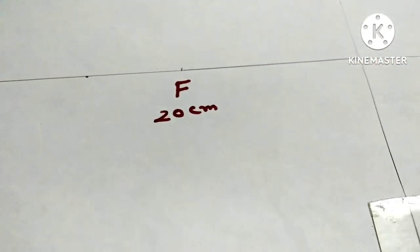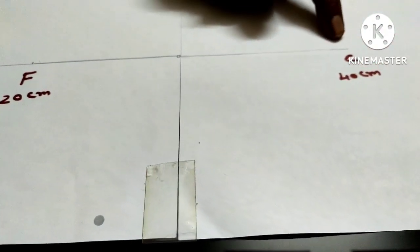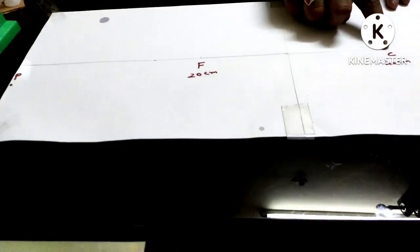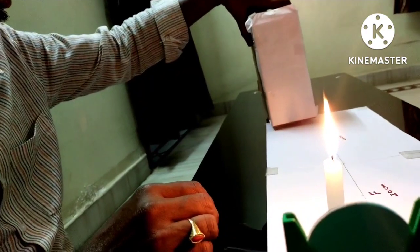P means pole. Pole of the mirror. F means focal point. The distance between P and F is called focal length. That is 20 cm. C is center of curvature. The distance between P and C is called radius of curvature. That is 40 cm.